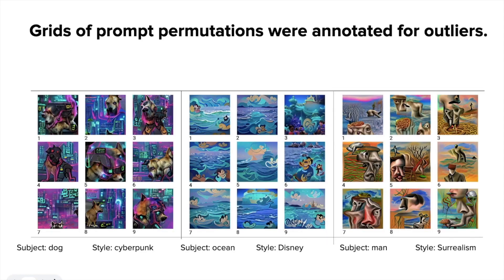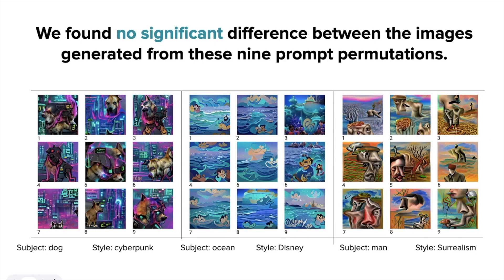To understand this, we generated 12 subjects and 12 styles with 9 different prompt permutations and presented these grids to annotators. From the annotation results, we found no significant difference between the quality of images generated from these 9 prompts. We concluded our first design guideline: when picking the prompt, focus on subject and style keywords instead of connecting words.